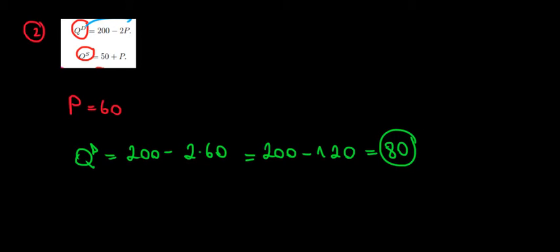Let's see how many units the suppliers are going to produce. The quantity supplied is going to equal 50 plus 60, so that's equal to 110.